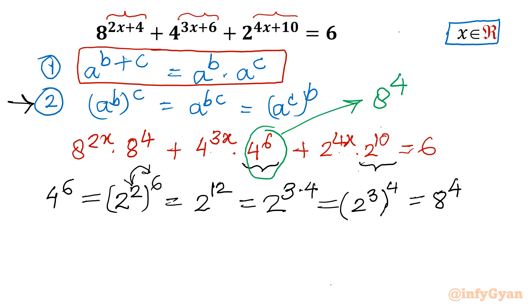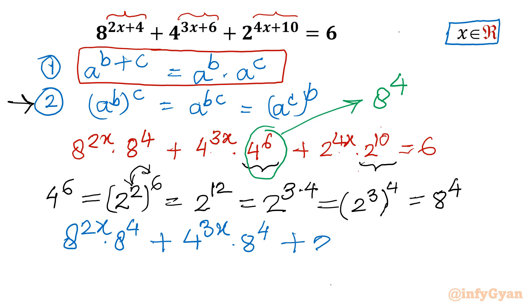Now I will split 2^10 as 2^4 × 2^6 using Property 1. So our equation becomes: 8^(2x) × 8^4 + 4^(3x) × 8^4 + 2^(4x) × 2^6 × 2^4 = 6. The equation has transformed into a much simpler form.